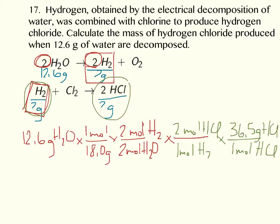So 12.6 divided by 18 times 2 over 2 times 2 times 36.5 gives you an overall answer of 51.1 grams of HCl. So this is exactly like the other stoichiometry we did, except for every individual reaction, we will have one extra mole to mole step.